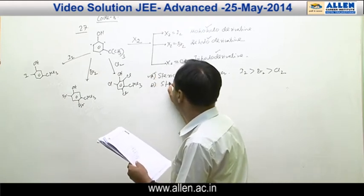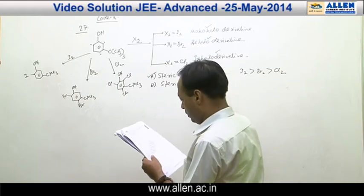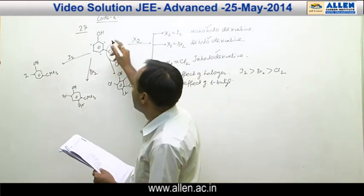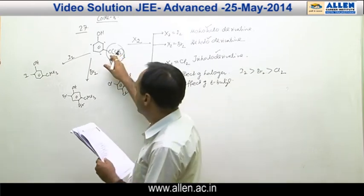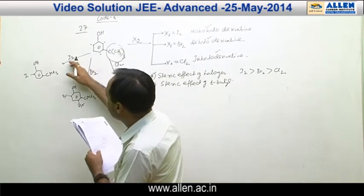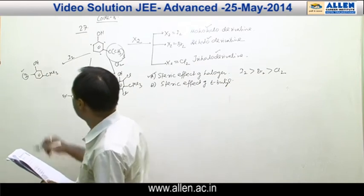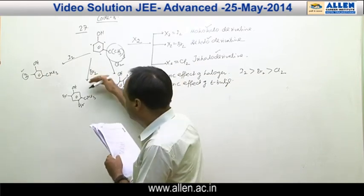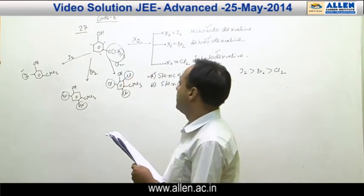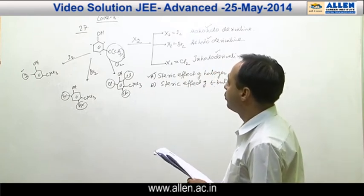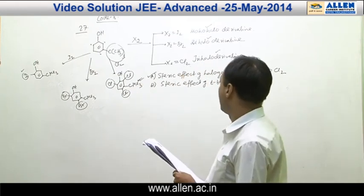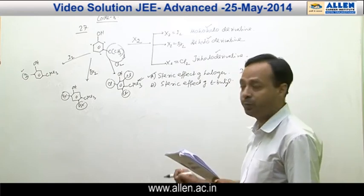Option B, it is steric effect of tertiary butyl group. Yes, it is also correct. Because tertiary butyl group is a bulky group. And when bulky group is there, electrophile cannot approach. And in presence of bulky electrophile, then it is monoproduct. Less bulky electrophile, it is diproduct. So it is also possible due to steric effect of tertiary butyl group. Tertiary butyl group also plays an important role.